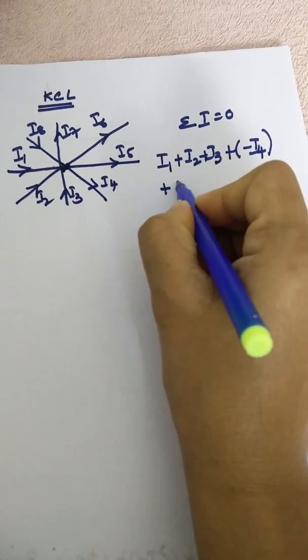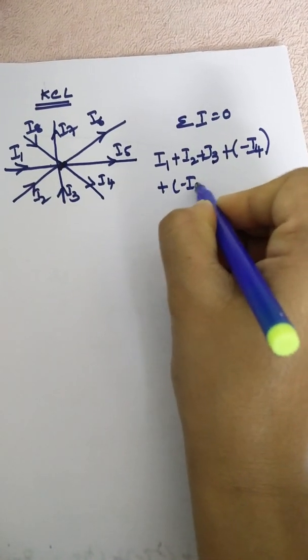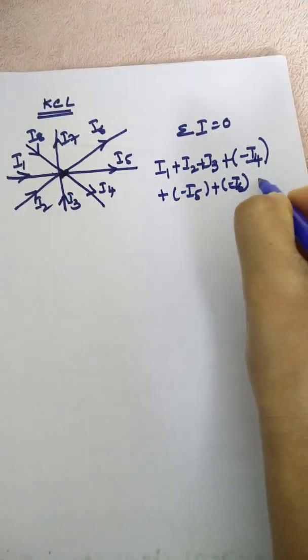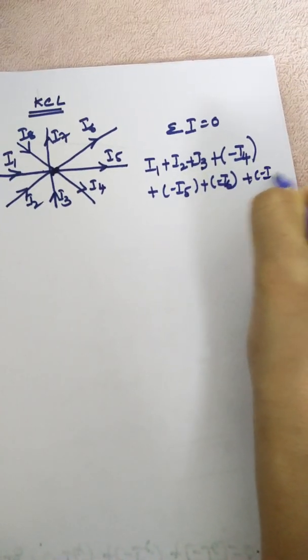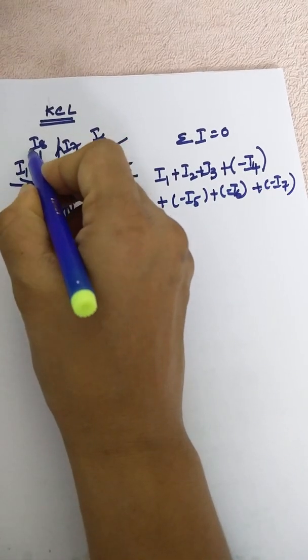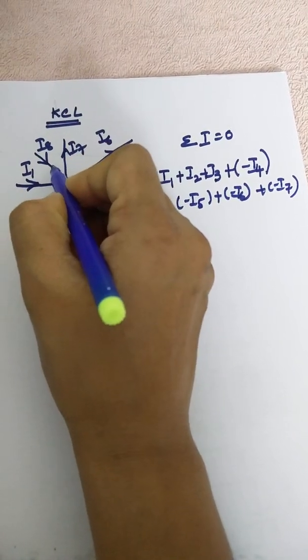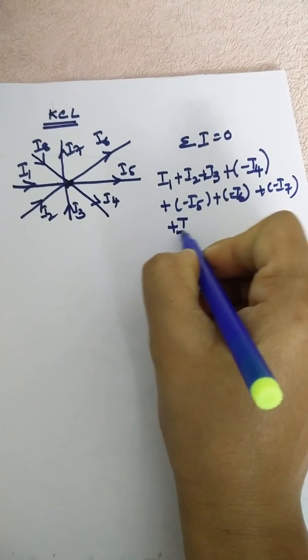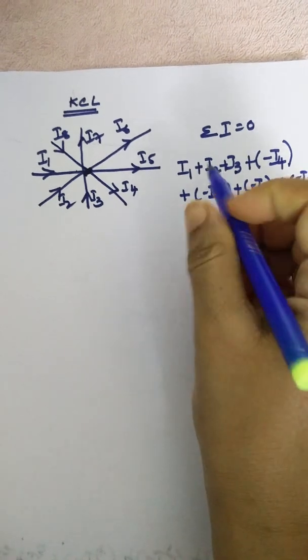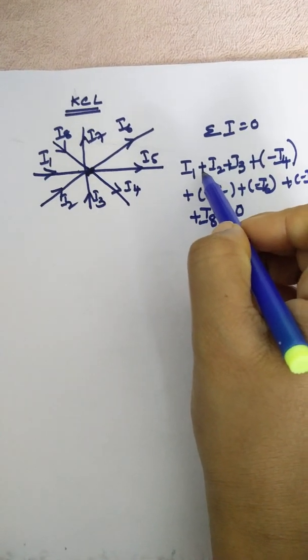Similarly, plus of minus I5, plus of minus I6, and plus of minus I7. And what about I8? I8 is entering. Entering currents are plus, so that is why plus I8 is equal to zero. So definition is like this.